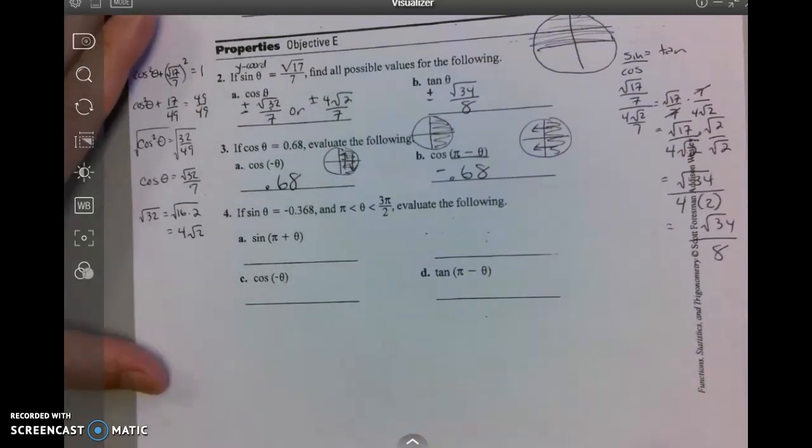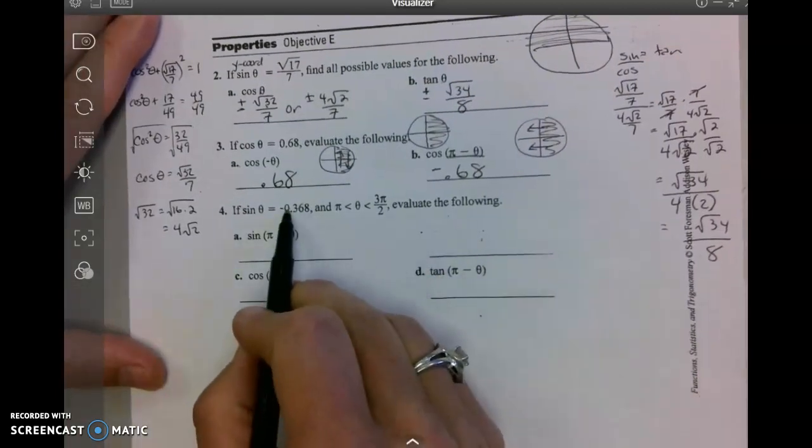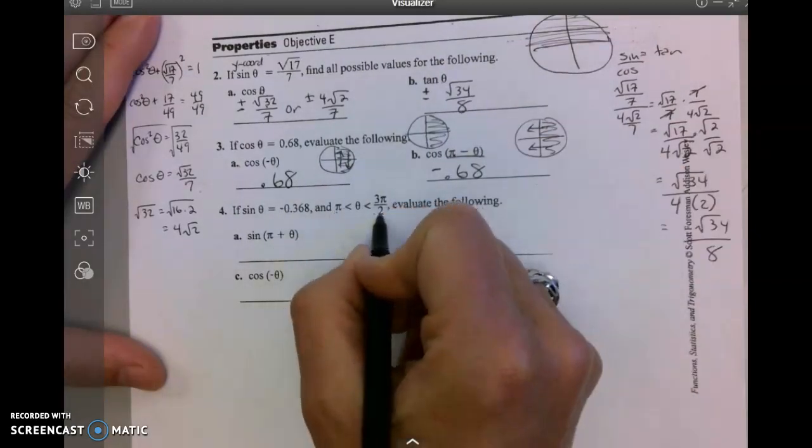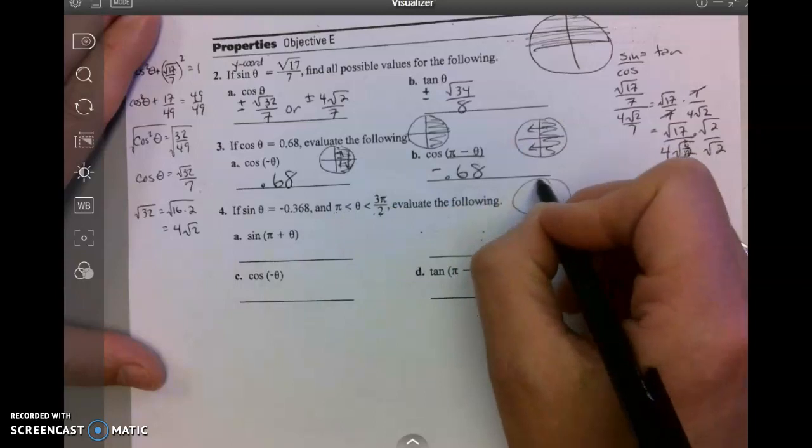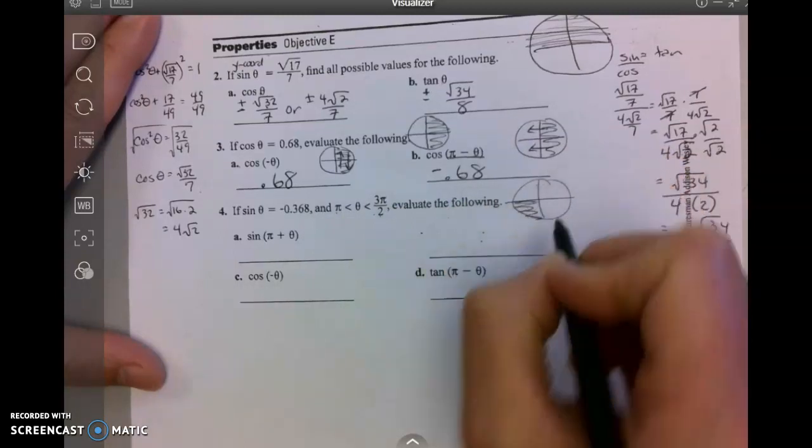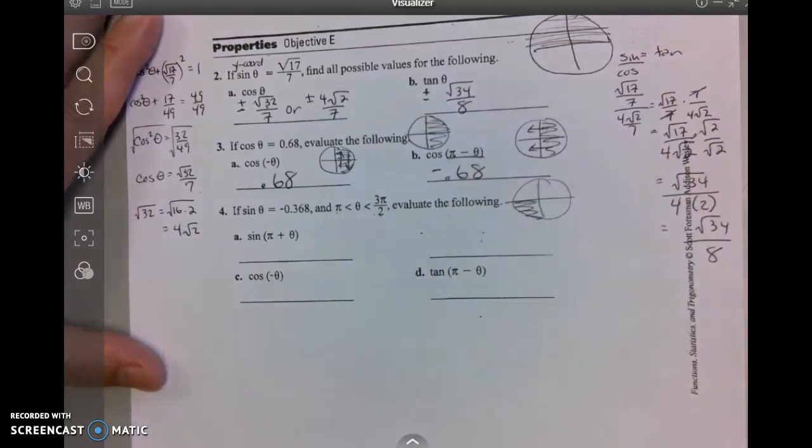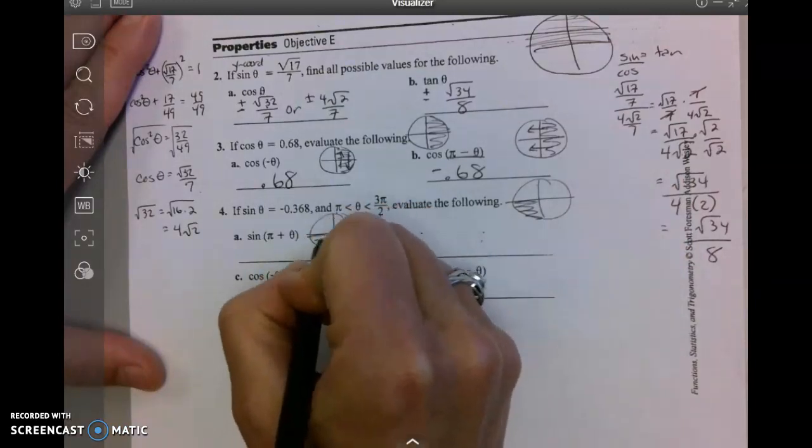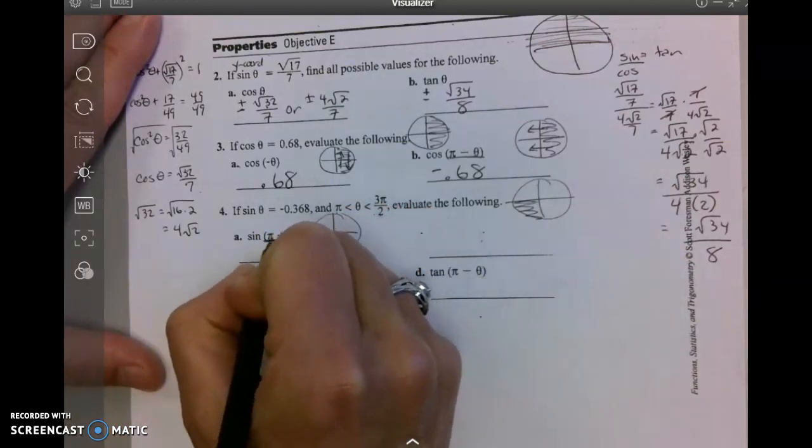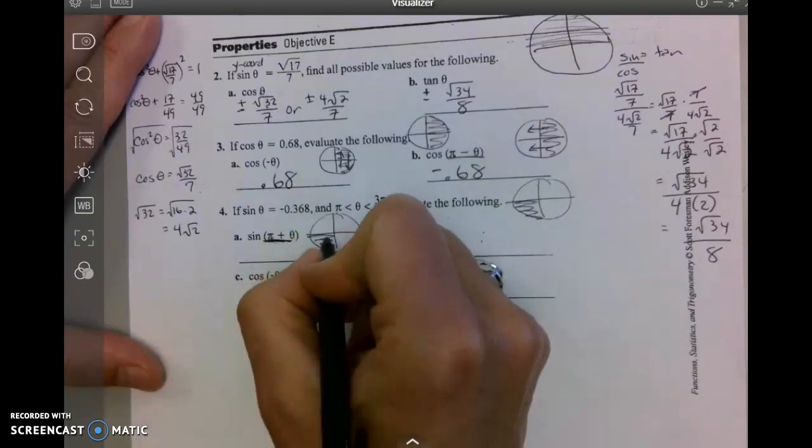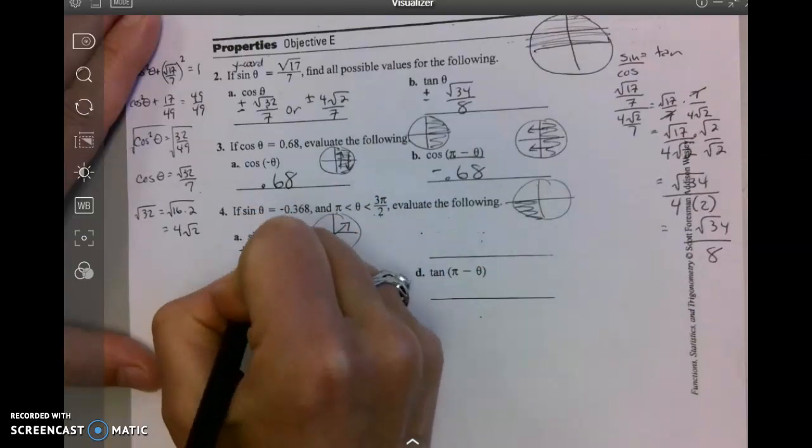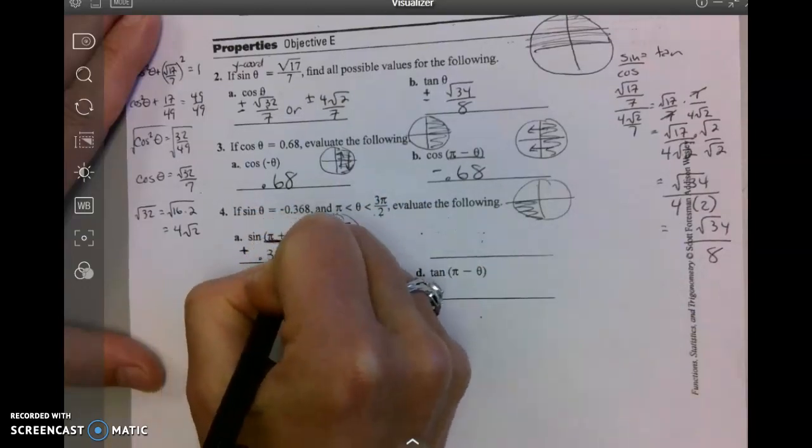And lastly, number 4. We are told what sine is and it's in the third quadrant because pi is 180 degrees and 3π/2 is 270 degrees. So we are in quadrant 3 for this problem. Let's draw that quadrant 3. This means move, add pi, move halfway around a circle so I go diagonal. Sine is positive here, so 0.368.